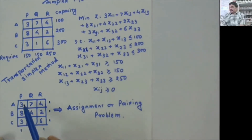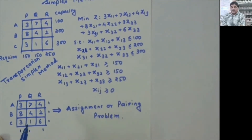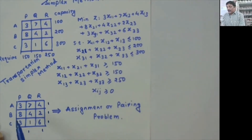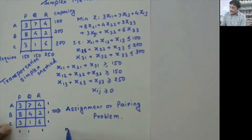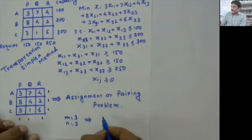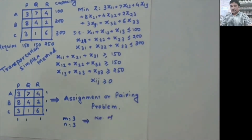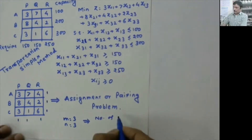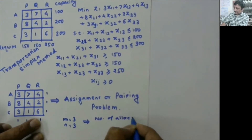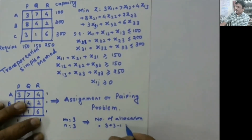In this 3×3 problem there are nine variables. In the transportation algorithm, the number of allocations must equal m + n − 1 = 3 + 3 − 1 = 5. But for an assignment problem, you only need 3 allocations. So you are short by 2 allocations, requiring you to insert 2 epsilon (degenerate) allocations.